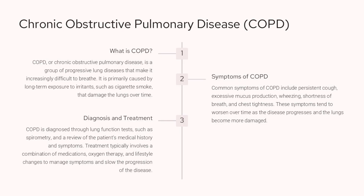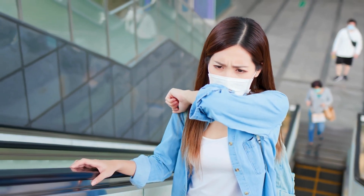COPD, or chronic obstructive pulmonary disease, is a group of progressive lung diseases that make it increasingly difficult to breathe. The primary cause is long-term exposure to irritants like cigarette smoke that damage the lungs over time. Common symptoms include persistent cough, excessive mucus production, wheezing, shortness of breath, and chest tightness, which tend to worsen as the disease progresses. COPD is diagnosed through lung function tests like spirometry and a review of the patient's medical history. Treatment typically involves a combination of medications, oxygen therapy, and lifestyle changes to manage symptoms and slow disease progression.